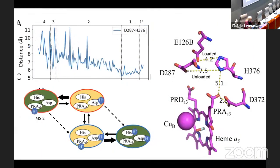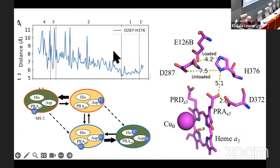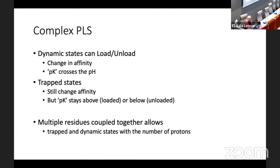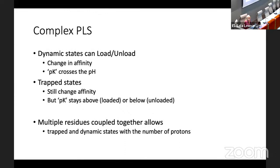We have dynamic states and trap states, and this is only possible with multiple residues making a complex proton loading site. There are other cases — such as glutamic acid 286 in cytochrome oxidase — which is a single residue proton loading site: it's either bound or not bound. But when you have a complex loading site, you can have tautomers with the same charge but very different properties — one where the proton is fixed loaded, one dynamic, and one fixed unloaded.